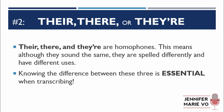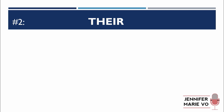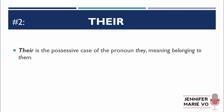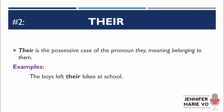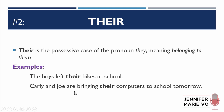Number two: there, their, or they're. These are homophones — although they sound the same, they are spelled differently and have different uses. Knowing the difference between these three is essential when transcribing. The first one, "their" (T-H-E-I-R), is the possessive case of the pronoun "they," meaning belonging to them. Example: "The boys left their bikes at school" — because the bikes belong to the boys. "Carly and Joe are bringing their computers to school tomorrow." Just like "its" without the apostrophe was possessive, "their" works the same way — the boys' bikes, their bikes.